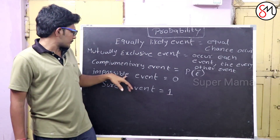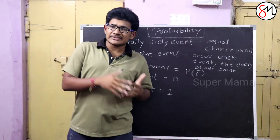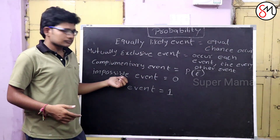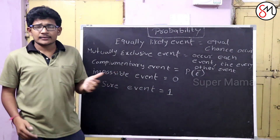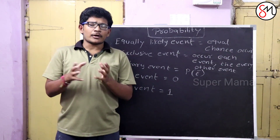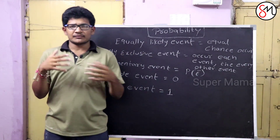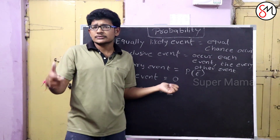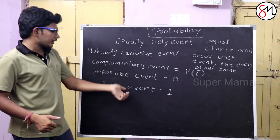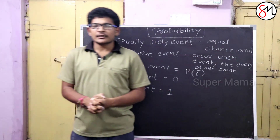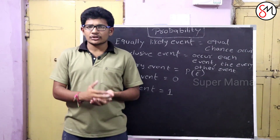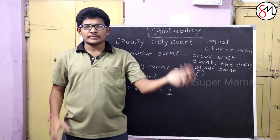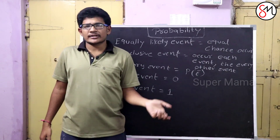Next, complementary events. And also impossible events — the probability value is 0. And sure events — I will use 'PAKKAH' (certain). A sure event has a probability of 1.